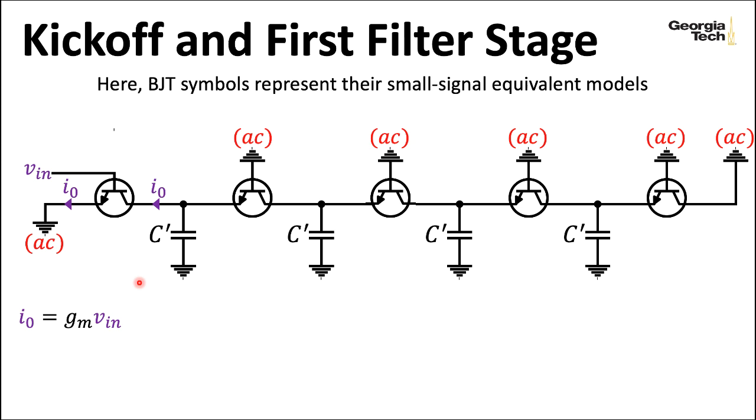If I think about what's the current flowing through this emitter, we can ask the question, what is the voltage, small signal voltage at the base minus the small signal voltage at the emitter? That's my base emitter voltage. So it's Vin minus zero for our AC ground times what the transconductance is. So this is our kickoff transistor. It turns the voltage into a current. And then for the rest of the stages, we can think about them as operating in a current mode.